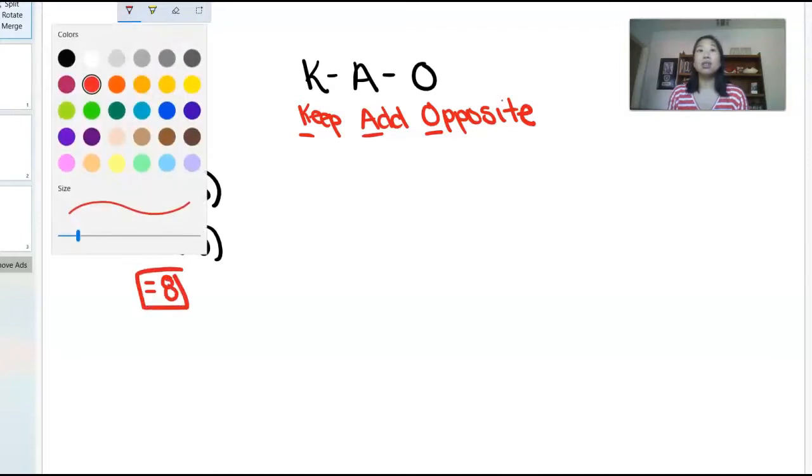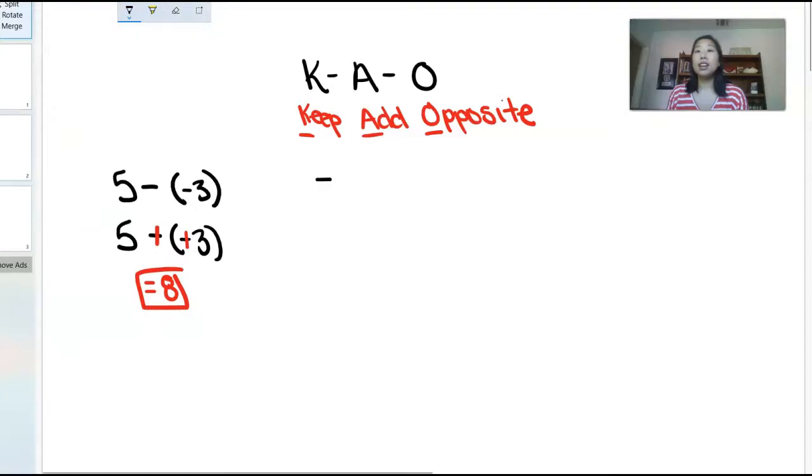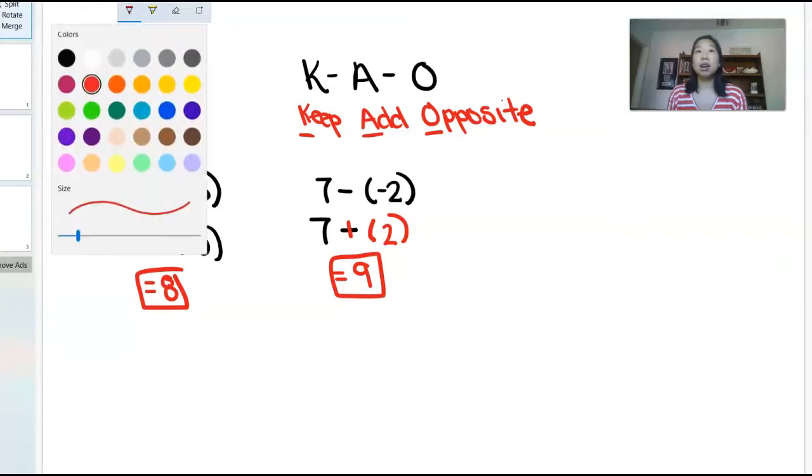Okay, so let's do another example. So if I had 7 minus negative 2. Okay, so we're going to keep the 7. We're going to change our subtract to an add. So this becomes a plus. And what is the opposite of negative 2? Positive 2. So then it becomes 7 plus 2, which is 9.